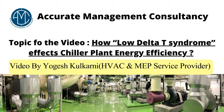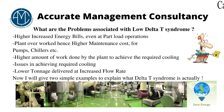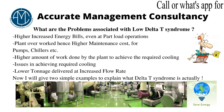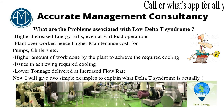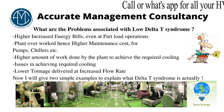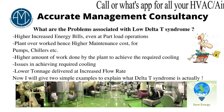Let us start the video. What are the problems associated with the low Delta T syndrome? Higher or increased energy bills, even at part load operations. Basically, in a low Delta T syndrome, the system runs at a higher chilled water flow delivering lower tonnage, which I will show you in my upcoming sheets through simple tonnage calculations, and hence you have a higher kilowatt per ton.